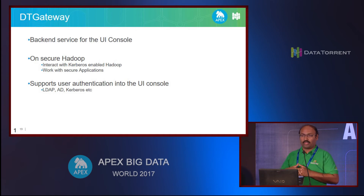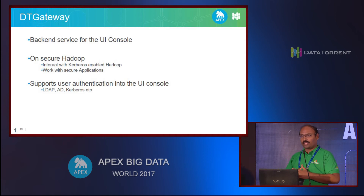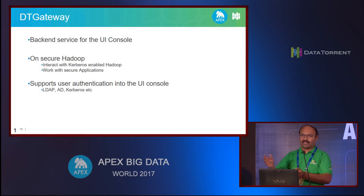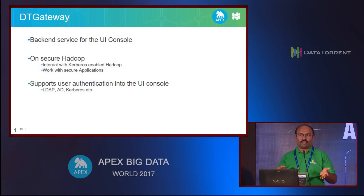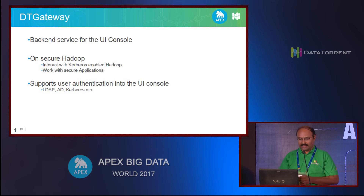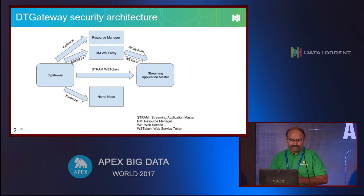Gateway first needs to be able to talk to secure Hadoop using Kerberos. Then it also needs to be able to talk to individual application masters. And you may also want to enable some sort of authentication for your UI console - you don't want users to just get access to everything. You want authentication integrated with whatever you're using in your enterprise, like LDAP, Active Directory, or PAM. Gateway in fact supports this functionality. Since gateway is also running on a fixed node, it can use Kerberos credentials to talk to both YARN and HDFS. But to talk to the application master, it needs to follow the web service proxy paradigm - it has to first get a token by going through the proxy service, then use the token to authenticate with the application master.